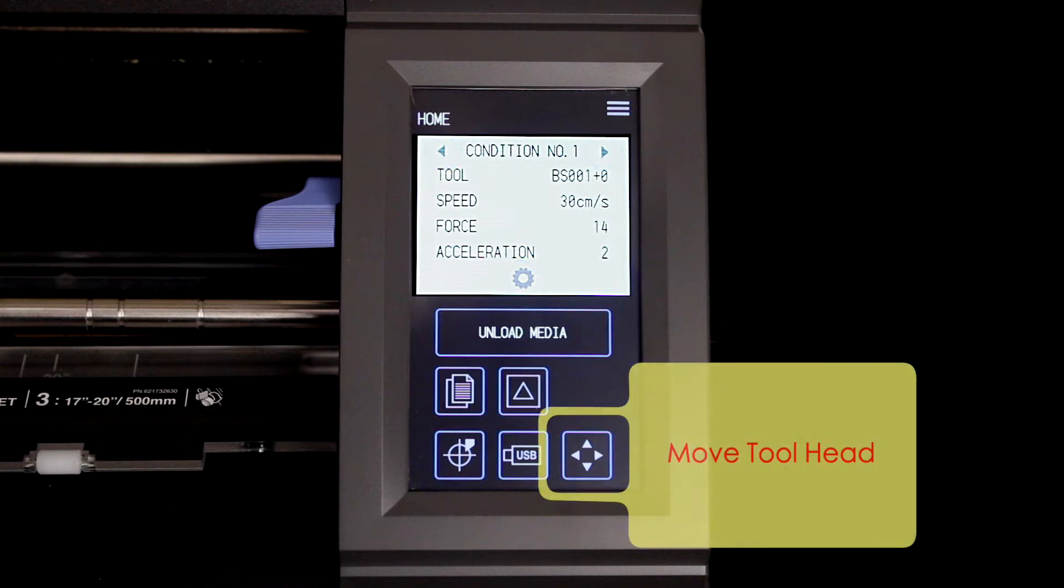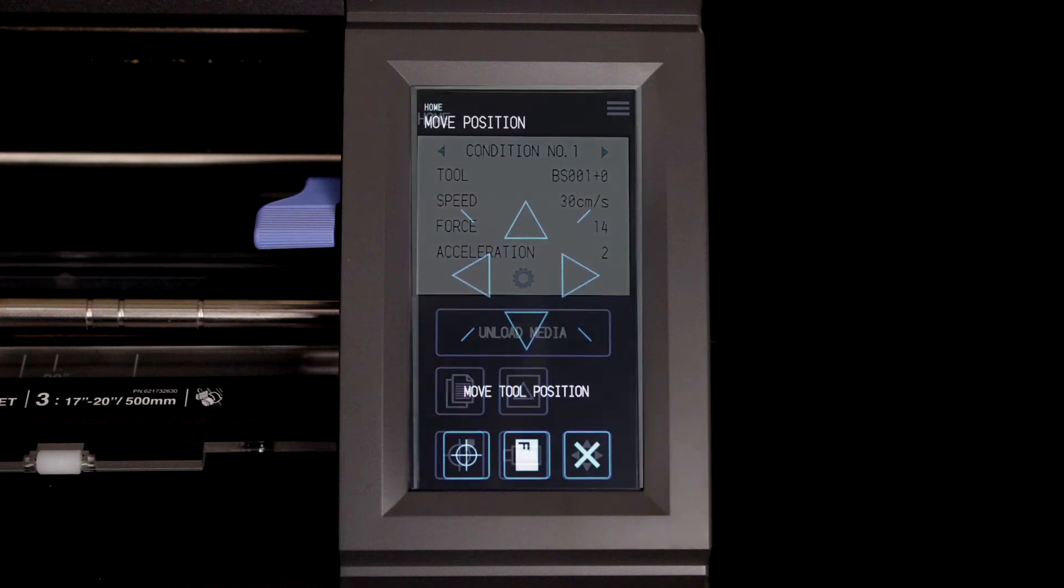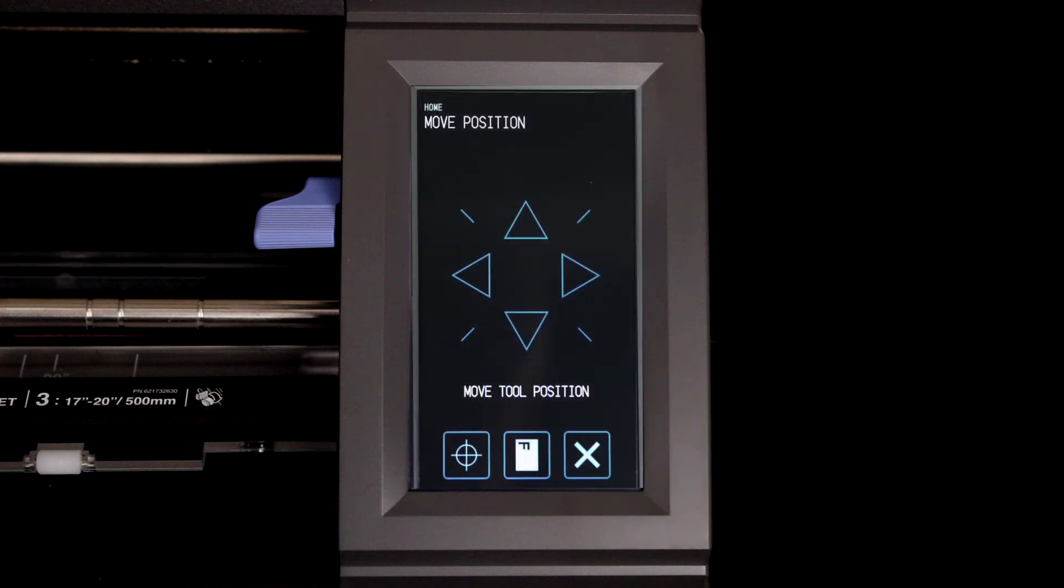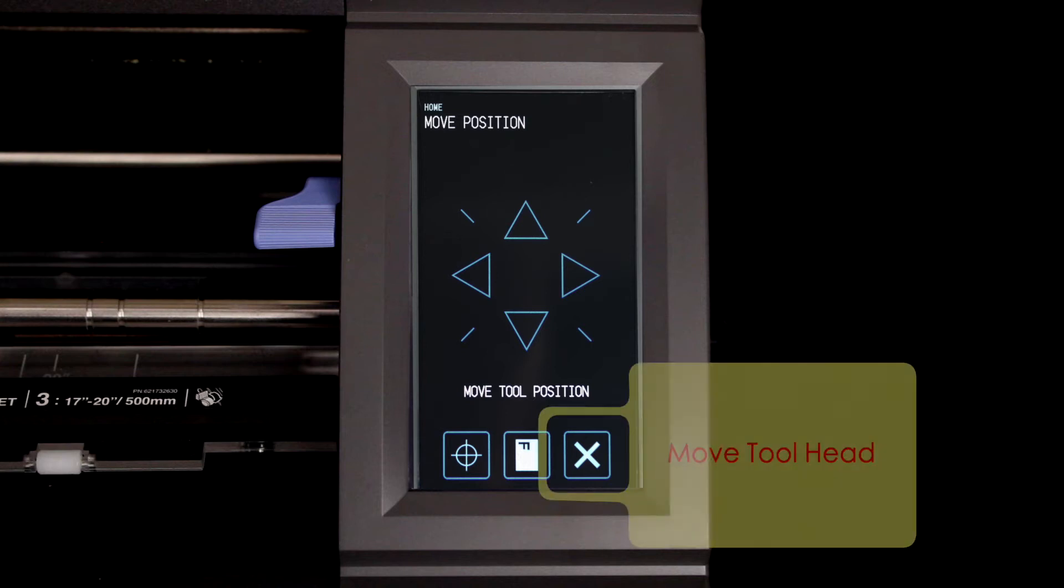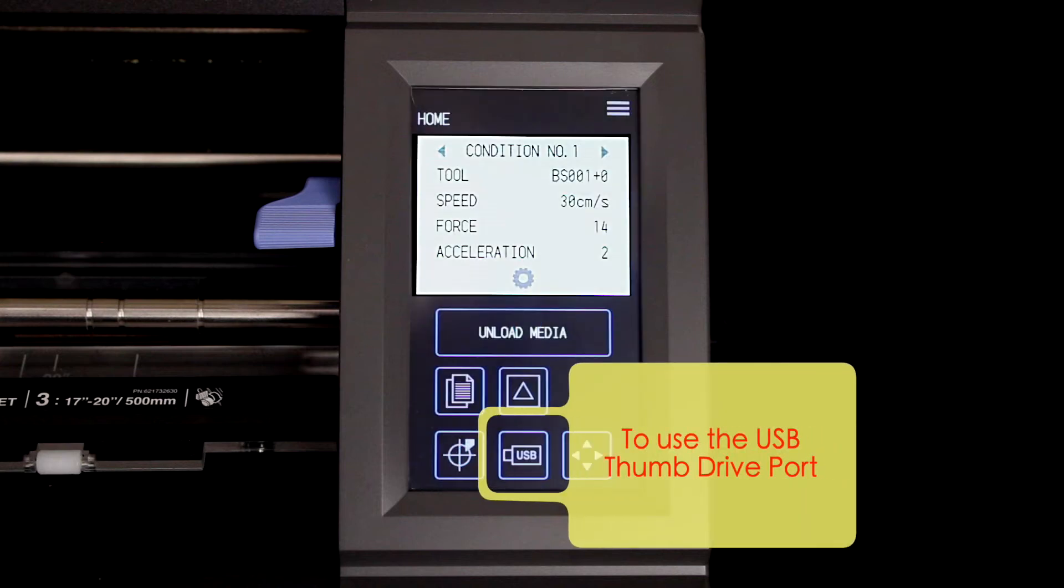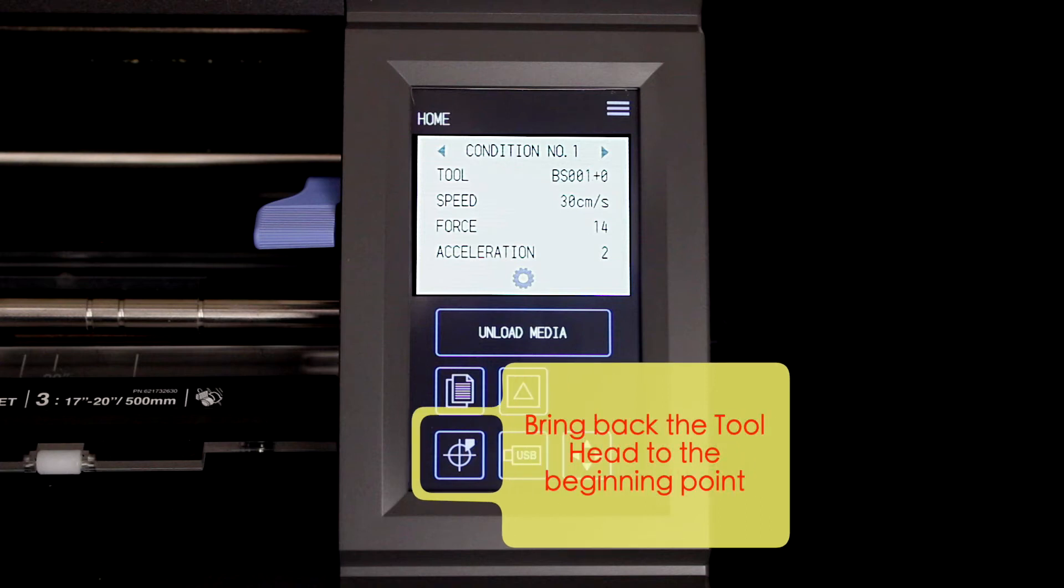This first button opens to a screen used for moving the tool head. The button next to it is used to access files on a USB thumb drive. Pressing this button will bring the head back to its original spot or start point.